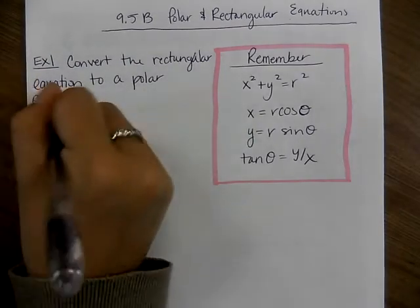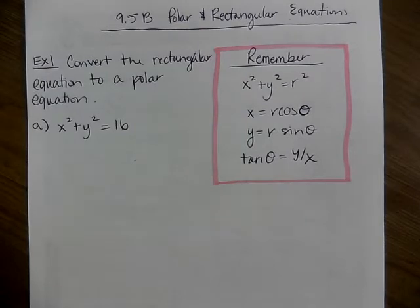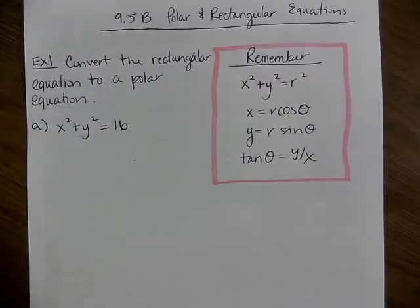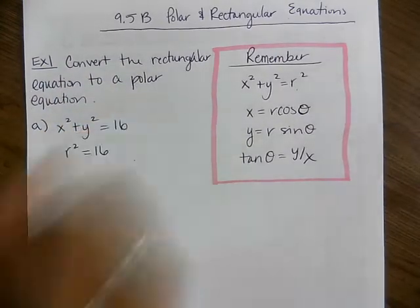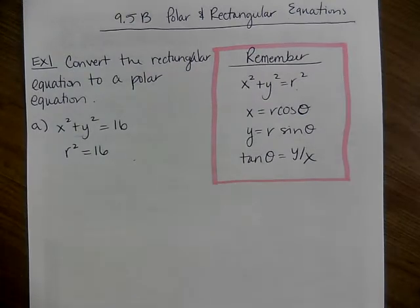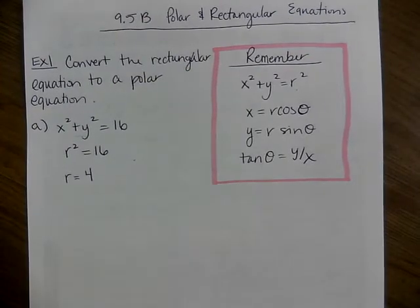So let's start out with x²+y²=16. My goal is to take that x and y and change it somehow to either be an r or theta. What is x²+y²? r squared. So we replace it with r². We're not done though, because we want it to just be an r equals. So how do you get r by itself? Take the square root. So we get r=4, and you assume the positive.